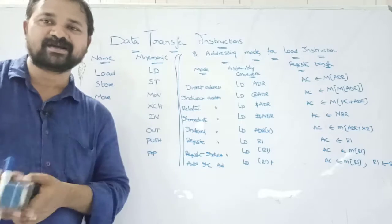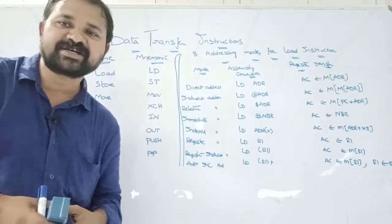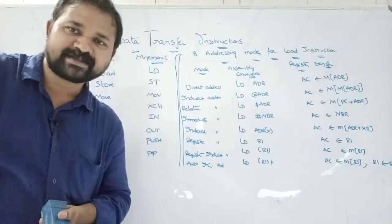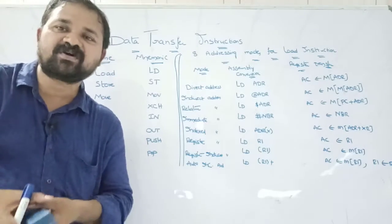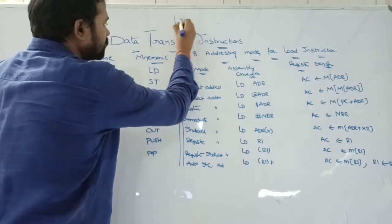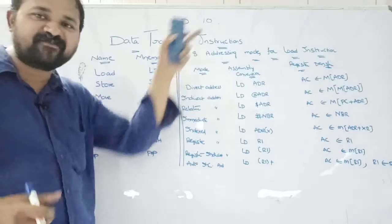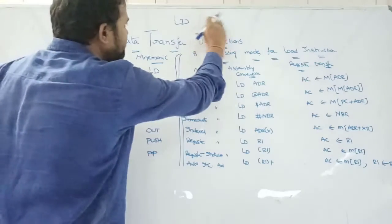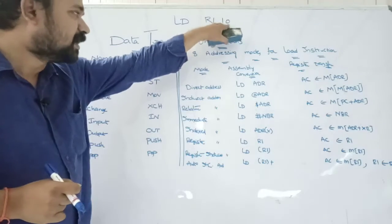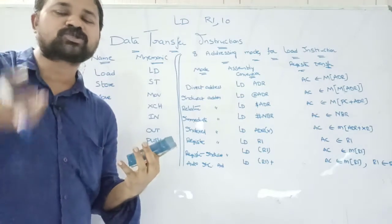Load is represented by the symbol LD. Load is mainly useful in order to load a memory word into a processor register such as the accumulator. By using load we can transfer a memory word (operand) into the accumulator. For example, 'LOAD 10' loads memory word 10 into the accumulator, or 'LOAD R1, 10' loads the memory word 10 into processor register R1.